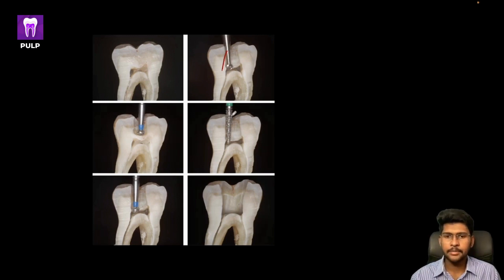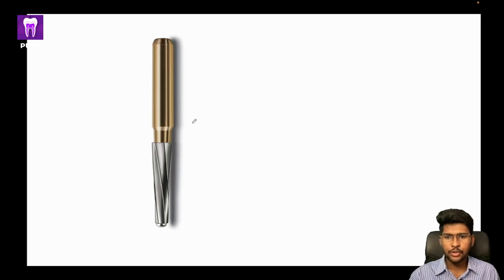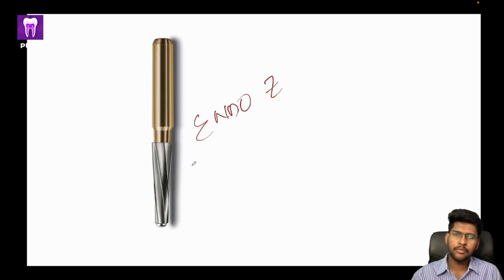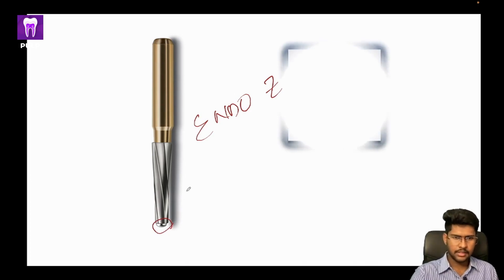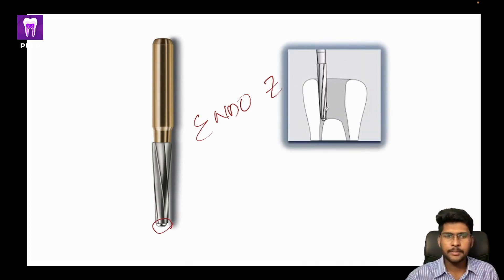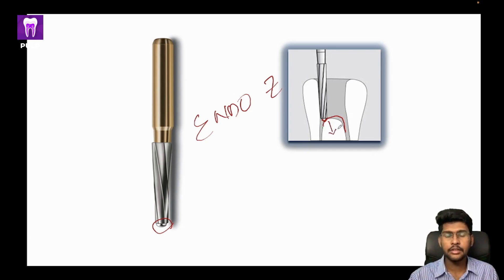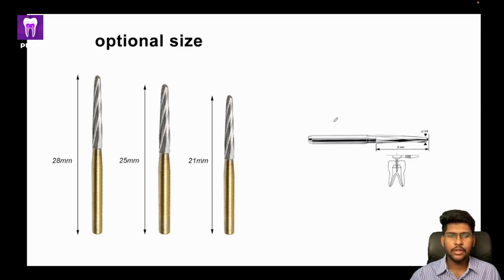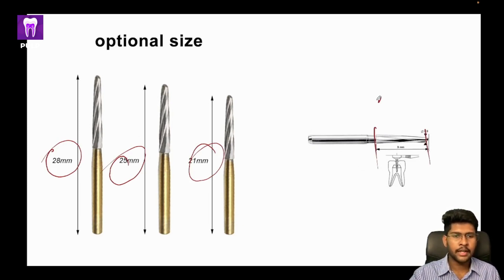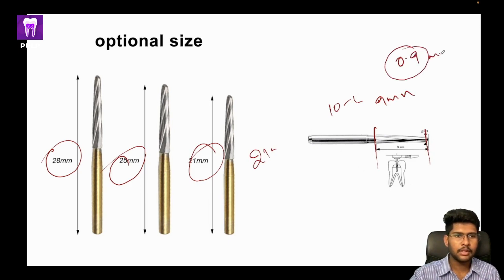I would suggest using the Endo-G or endo-access burr, which has very good cutting efficiency — you can refine the walls of the canal in a very short time. It also has a safe tip, which is critical because once you enter the pulp chamber, the floor must never be damaged. A cutting tip could perforate the pulpal floor, which is not acceptable. The Endo-G burr comes in three sizes: 21 mm, 25 mm, and 28 mm. The cutting length is approximately 9 mm for the 21 mm burr and 10-11 mm for larger sizes, with a tip diameter of approximately 0.9 mm.